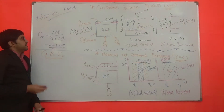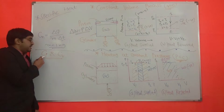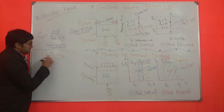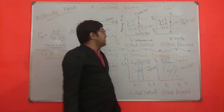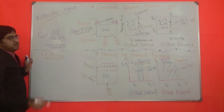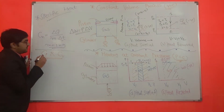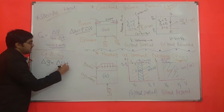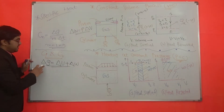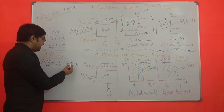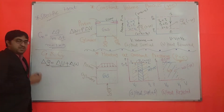In case of gases, there are two specific heats: Cp and Cv. Cp means specific heat at constant pressure, and Cv means specific heat at constant volume. To derive the equations of enthalpy and internal energy, we consider the first law of thermodynamics, which states: heat transfer equals internal energy plus work done — delta Q equals delta U plus delta W.